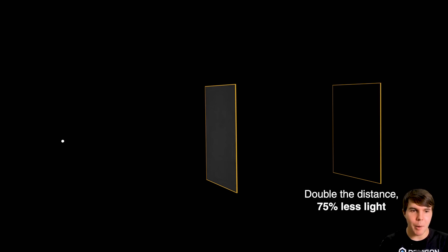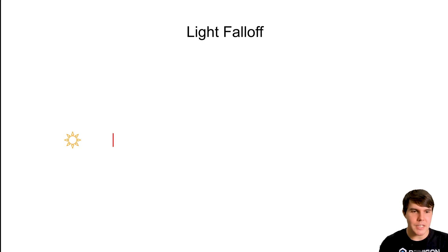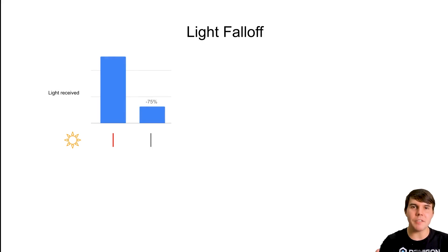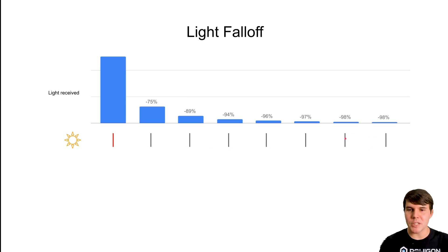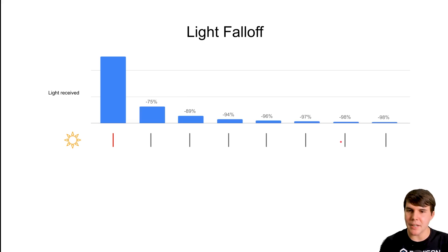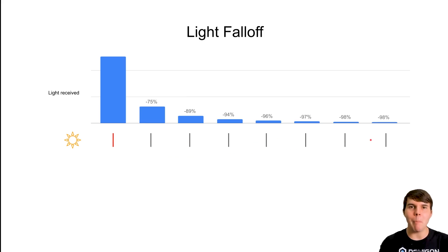I didn't realize it was this severe. I actually did this as an experiment in Blender — did this exact test, put one plane there, recorded the value, put another plane behind it, recorded that value — and it was exactly 75% less. What's crazy is what happens when you go further and further back. By the time you get to plane number 8, you're getting like 98% fall-off from where it would be at the start. Interestingly, between that plane and the one in front of it — number 7 — the fall-off is really only a fraction of a percent, whereas from the first position it's 75%.